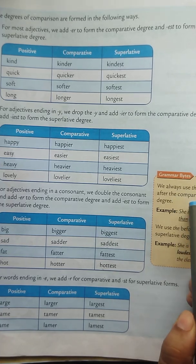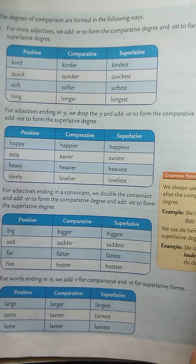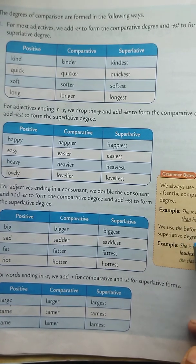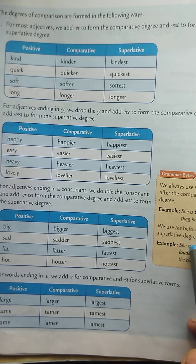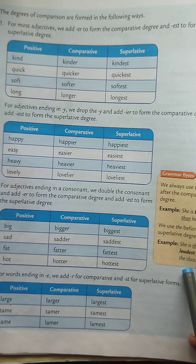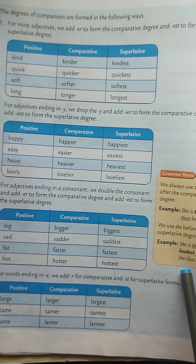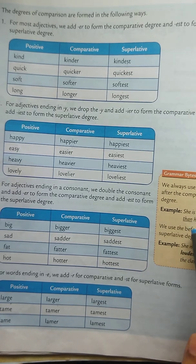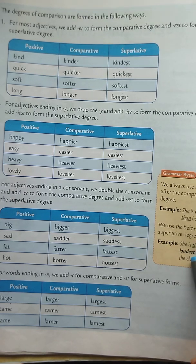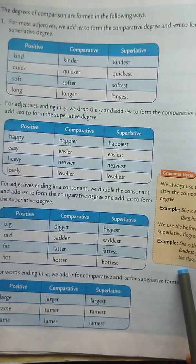Grammar byte: we always use THAN after the comparative degree. Example: she is taller than her sister. We use THE before the superlative degree. Example: she is the loudest girl in the class.